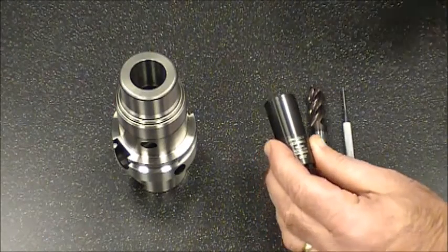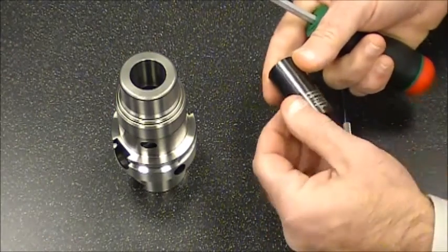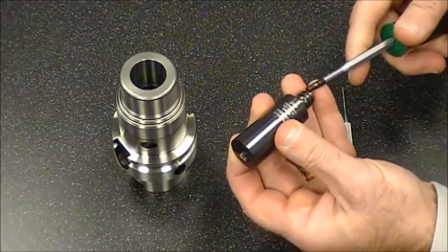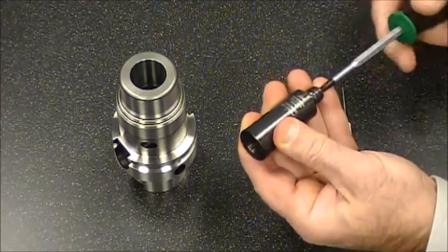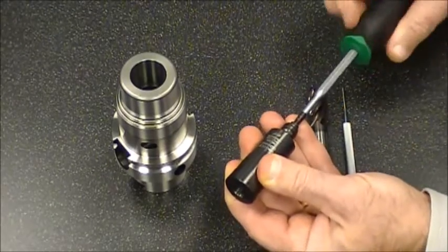First, we take the pin lock clamping sleeve and back out the axial link setting screw, having it stick out about a quarter of an inch off the end of the clamping sleeve.